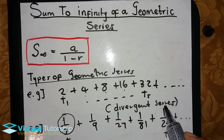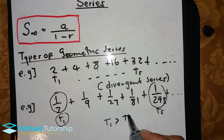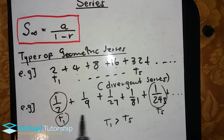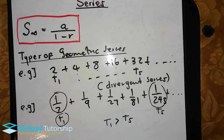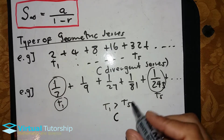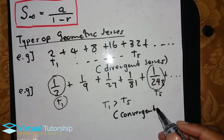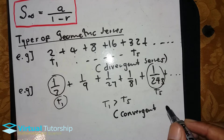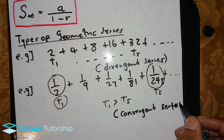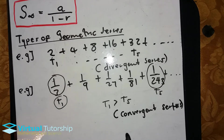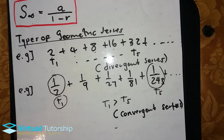Now compare T1 to T5. If T1 is greater than T5 — in other words, it decreases to a particular value.